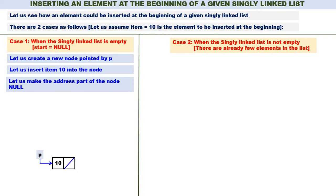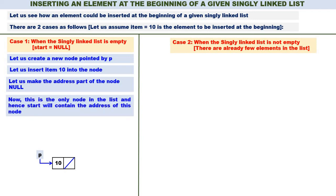Start always should contain the address of the first node. Now there was no node in the linked list — the linked list was empty. We have created a new node pointed by P, and start should contain the address of this node. This is the only node in the list, hence start will contain the address of this node. At the beginning, start was equal to null; now after inserting 10, start contains the address of the node containing 10. That's all for case 1.